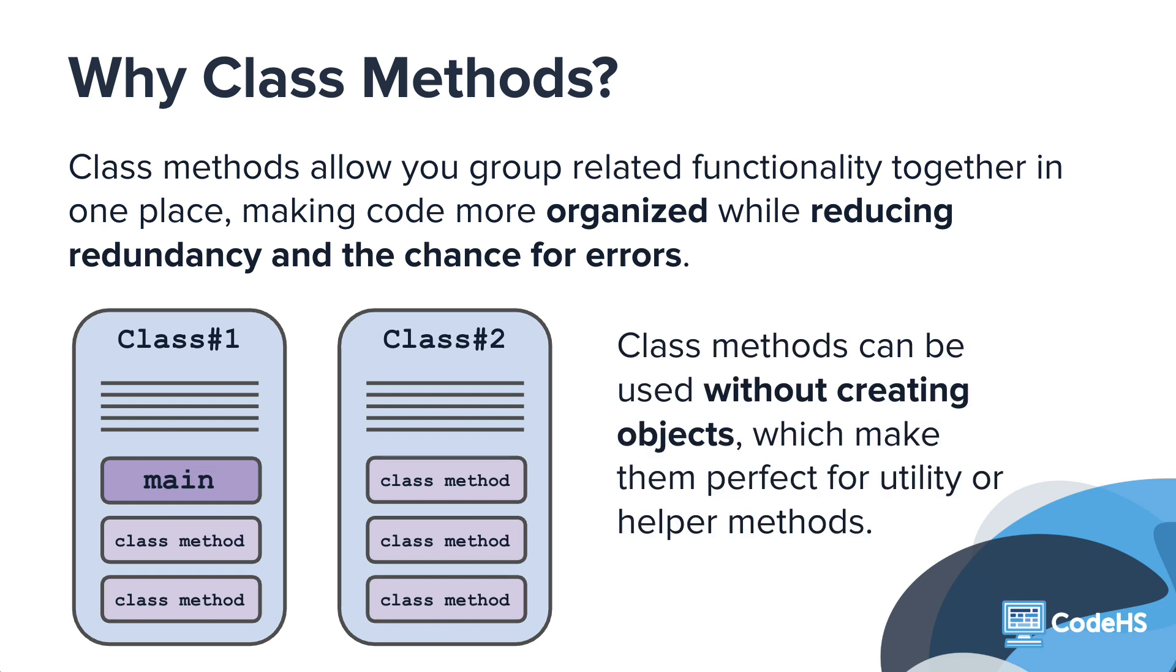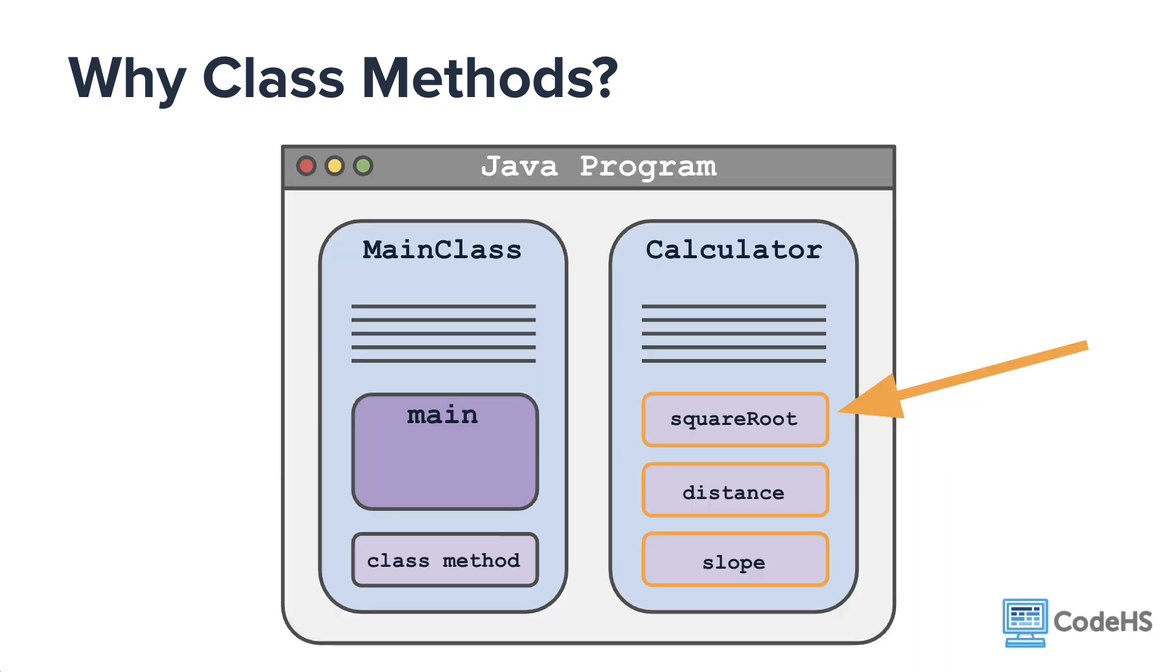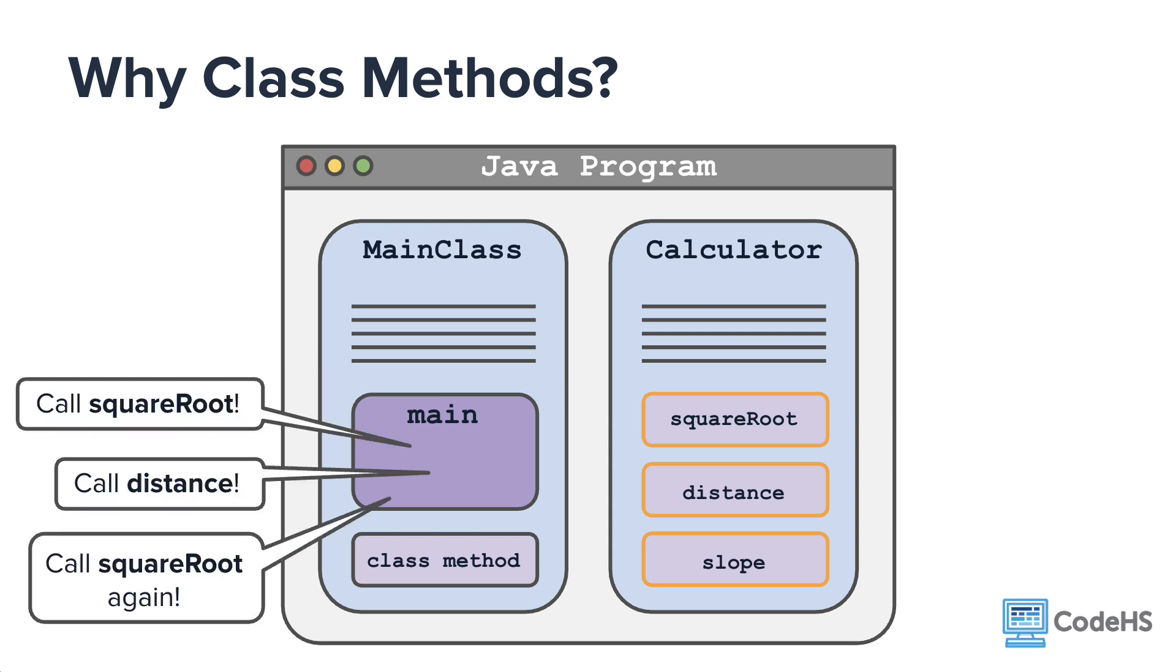And in contrast to instance methods, which you'll learn more about later, class methods can be used without creating objects, which make them perfect for utility or helper methods. Like, for example, here are class methods that calculate the square root of a number, the distance between two points, and the slope of a line between two points. These could be very helpful in a math or science related program, and would allow you to perform these calculations throughout your program without having to rewrite or know their formulas every time.